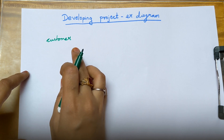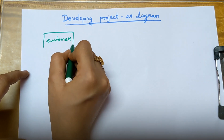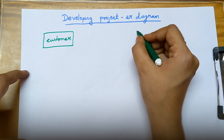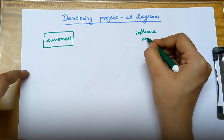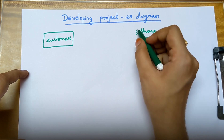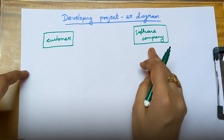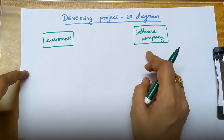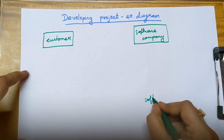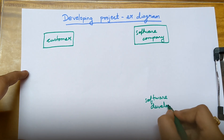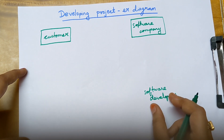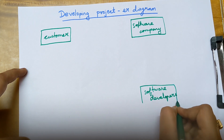We must write an entity inside a rectangular box, so we draw a rectangular box and write customer inside it. The second entity is software company. A software company is physically present — it is a building you can touch — so therefore software company is an entity, written inside a rectangular box. The next entity is software developers. Developers are persons, so software developer is an entity and must be written inside a rectangular box.